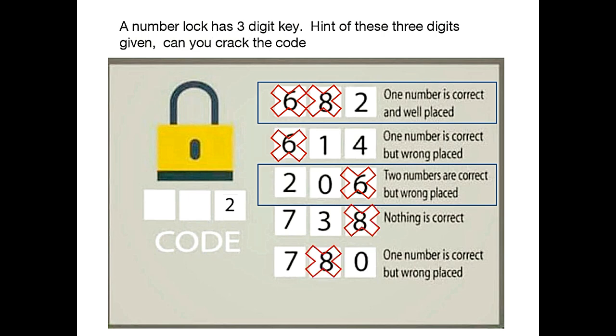Coming back to third condition, now we know that 0 is the right answer. Now we have to place 0 at the correct position. 0 cannot be at the second position because the third condition says that 0 is wrongly placed. 0 cannot be at the third location because 2 is already there. Hence, 0 has to be at the first location.